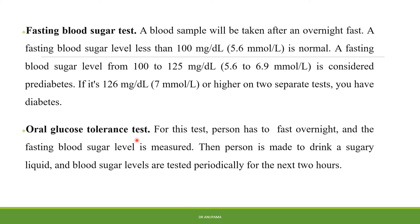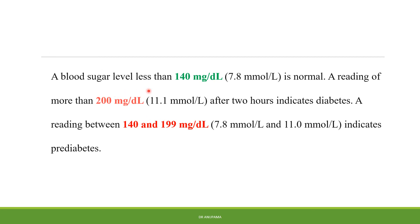For the oral glucose tolerance test, the person fasts overnight and the fasting blood sugar level is measured. Then the person is made to drink a sugary liquid and blood sugar levels are tested periodically for the next 2 hours. If levels are less than 140 milligrams per deciliter the person is normal; a reading of more than 200 after 2 hours indicates diabetes; and a reading between 140 to 199 indicates pre-diabetes.